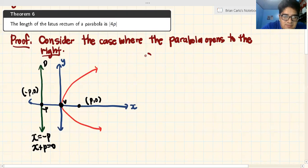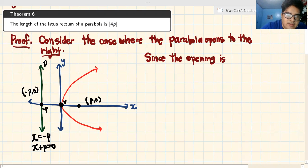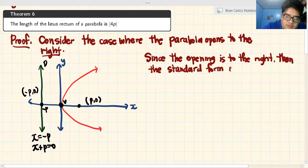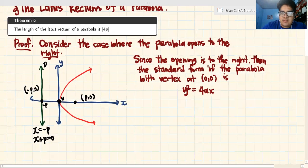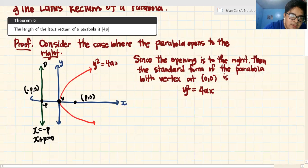Now, let's go back to the proof. Since the opening is to the right, then the standard form of the parabola with vertex at (0, 0) is y² = 4px. That is the equation of the parabola. y² = 4px.